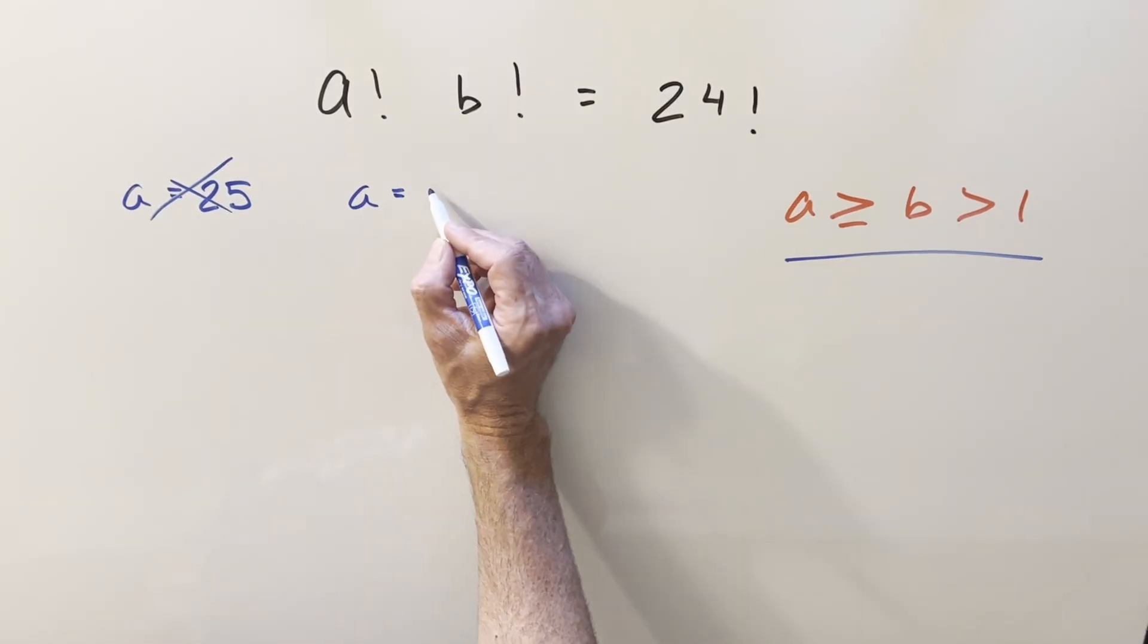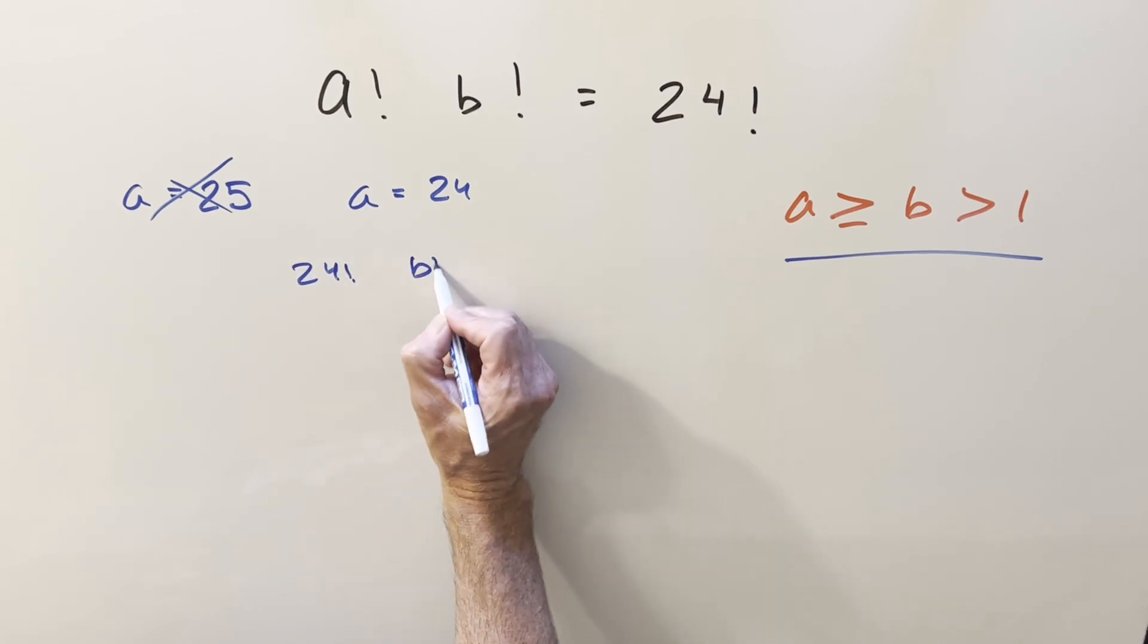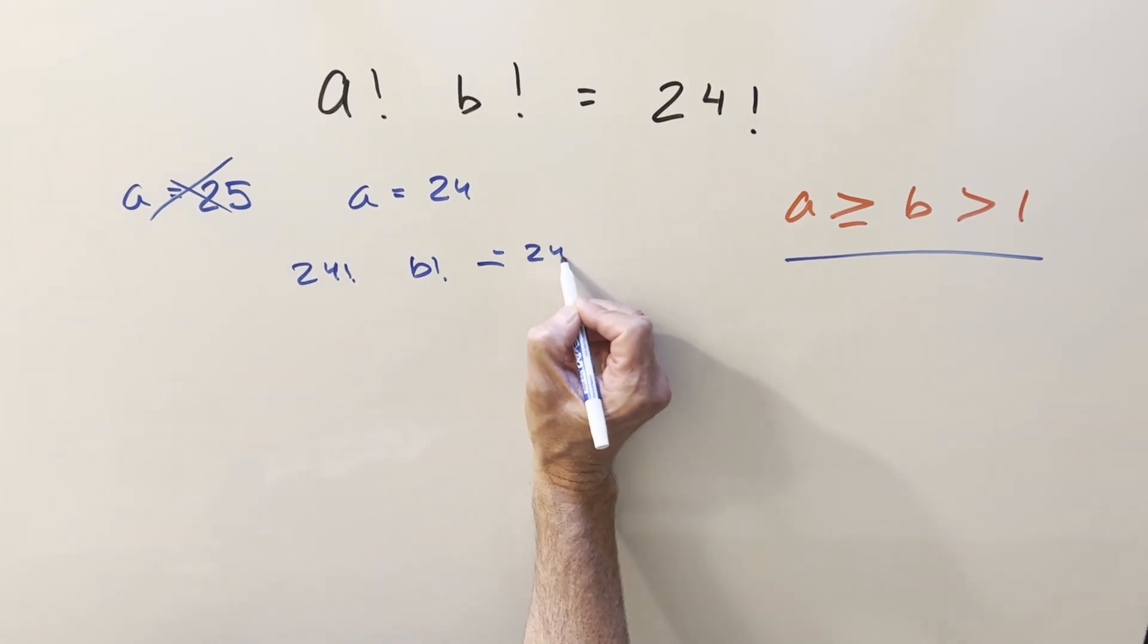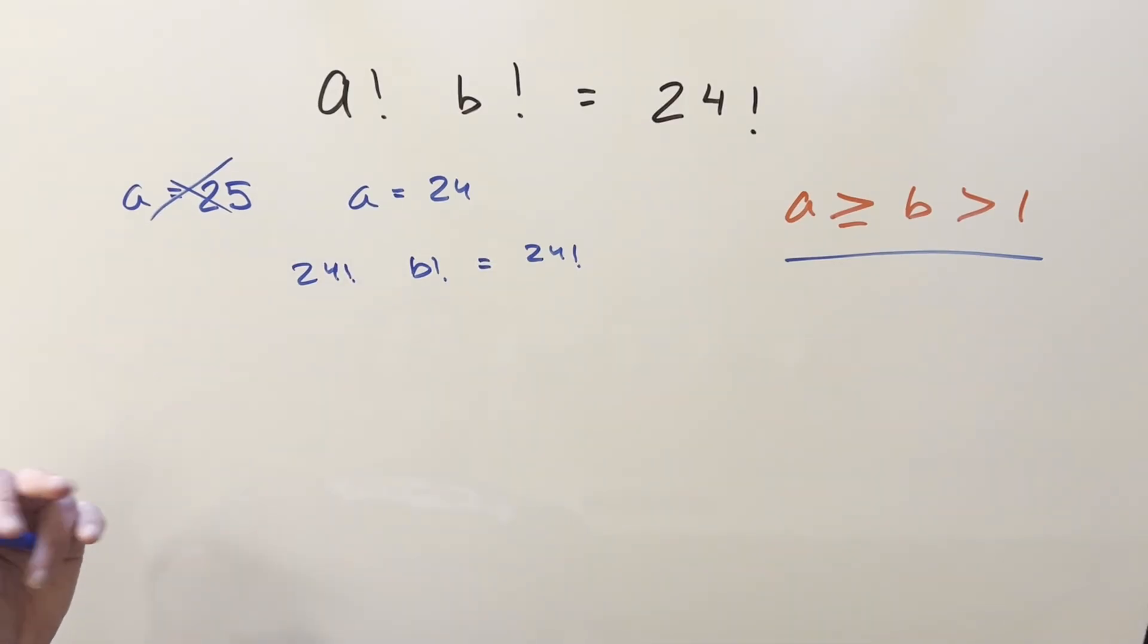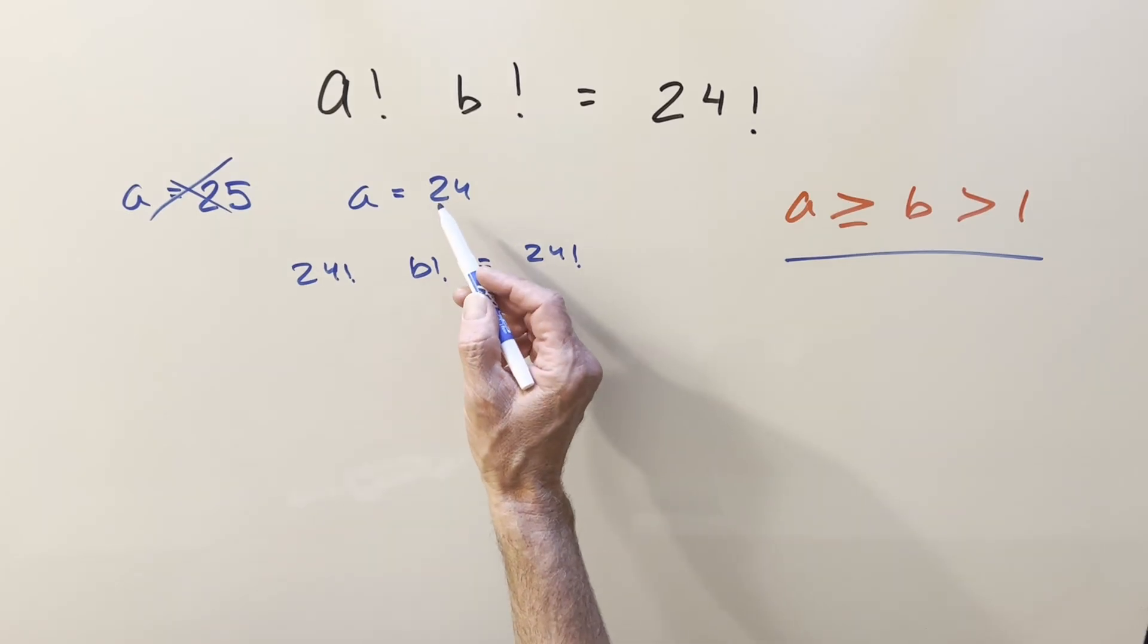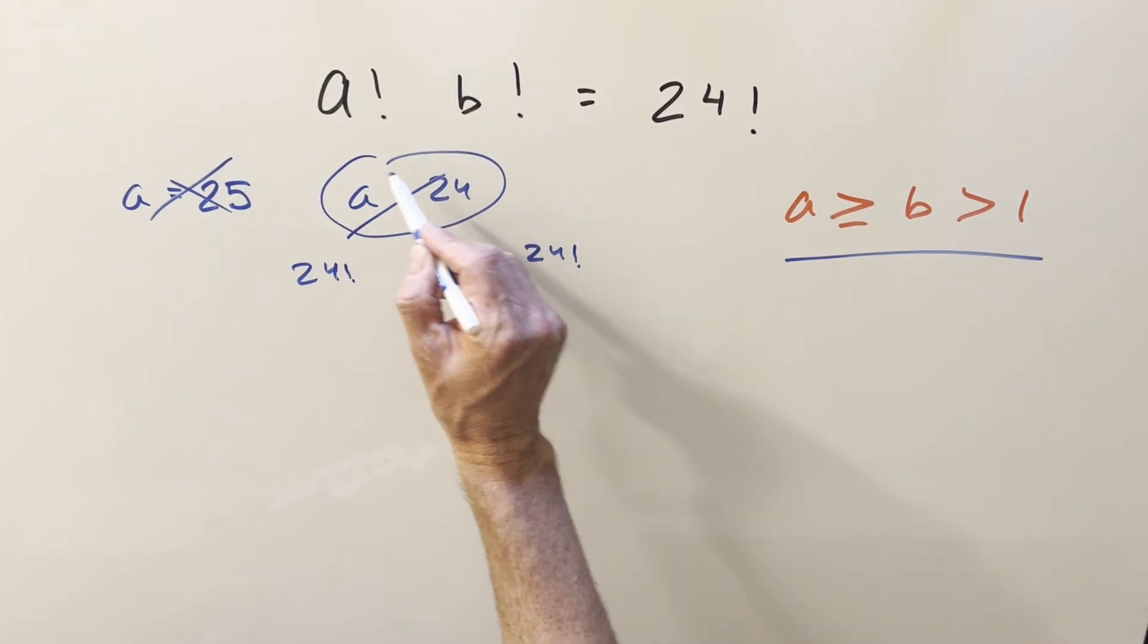So if we look at a equals 24, so then we have 24 factorial b factorial equals 24 factorial. But this only works when b factorial is 1. Over here, this condition means we're starting at 2. So there's no way we can be a equals 24 either. So this case is also just using process of elimination.